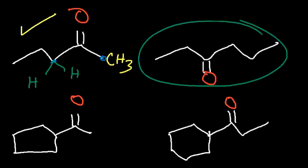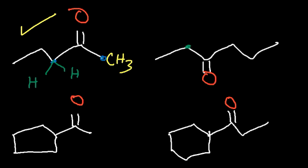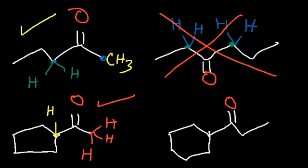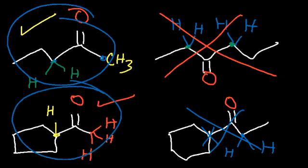What about the ketone on the right — is that a methyl ketone? Let's look at the two carbons next to the carbonyl group. This carbon has two hydrogens, and this one also has two hydrogens, so this is not a methyl ketone. Looking at the next one, here we do have a methyl ketone. This carbon only has one hydrogen, but the carbon at the end has three, which is a methyl group. For the other side, that carbon only has two hydrogens, so that side is not a methyl ketone. Only these two compounds will show a positive iodoform test.